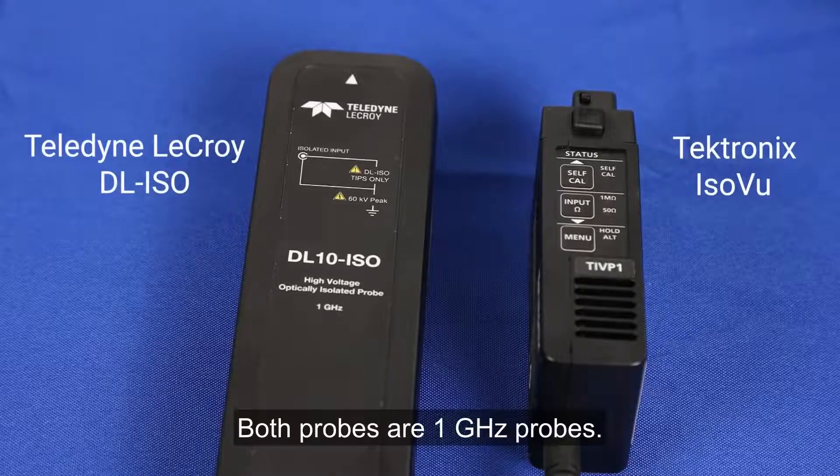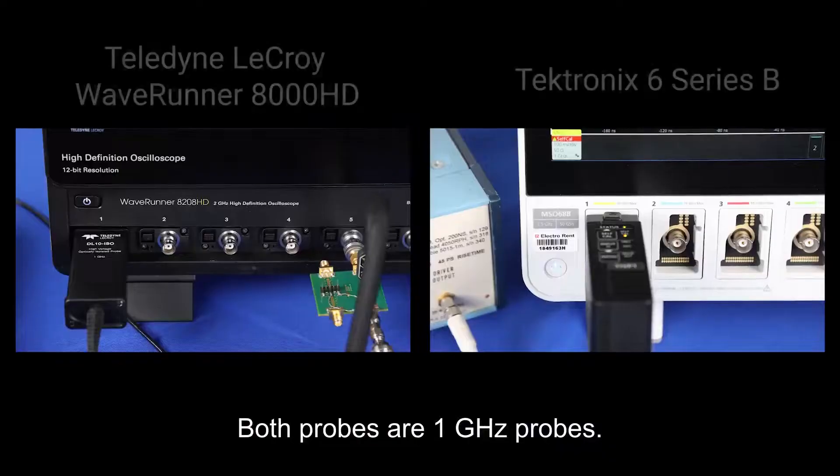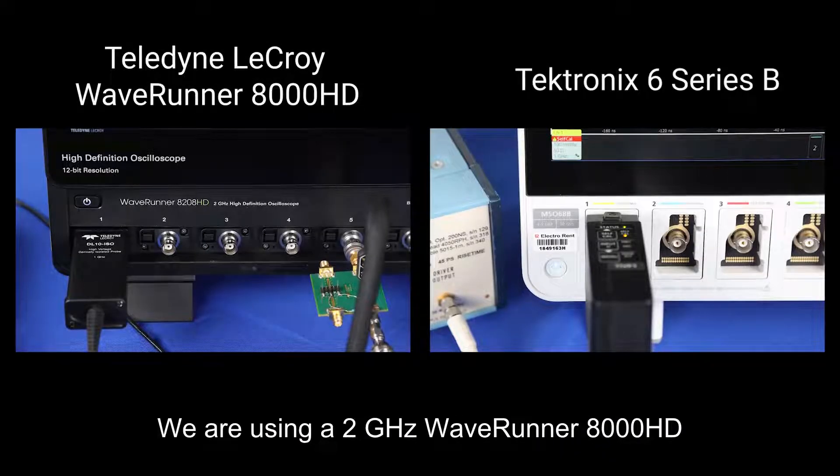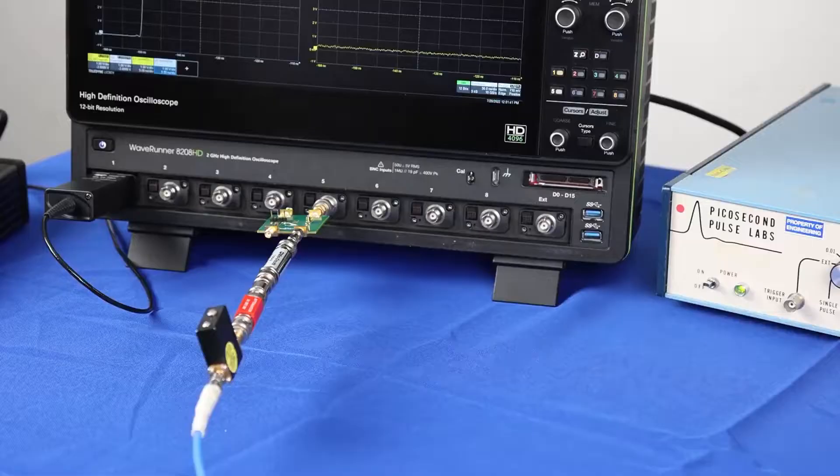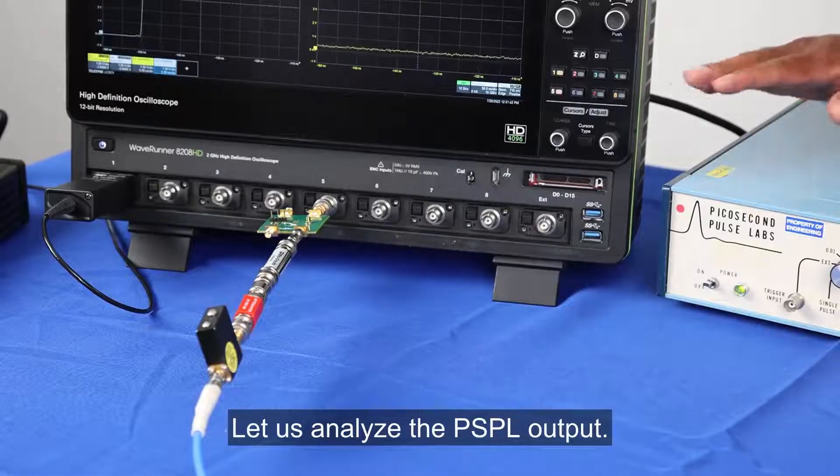Both probes are 1 gigahertz probes. We are using a 2 gigahertz Waverunner 8000 HD and a 2.5 gigahertz Tektronix 6 Series B model. Let us analyze the PSPL output.